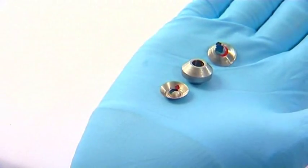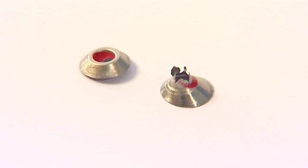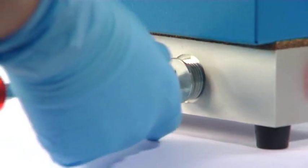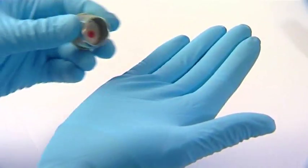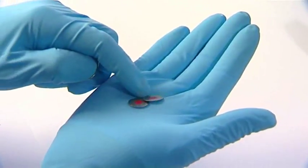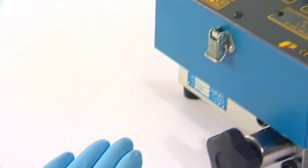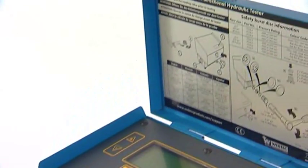Dispose of the disks according to local regulations. Take two new safety burst disks from the spare disk holder and check that they are the correct diameter and pressure rating, which is indicated by their color, against the instruction label.